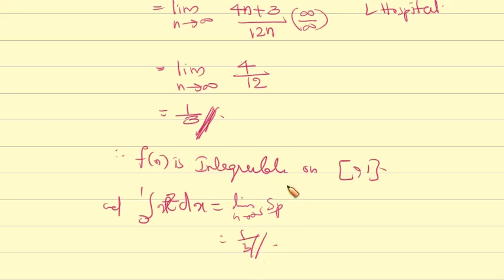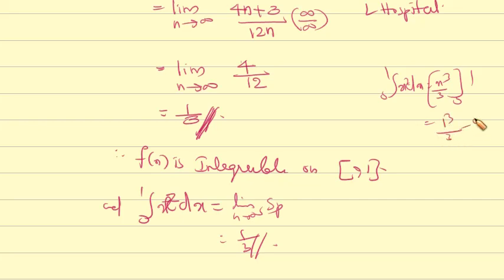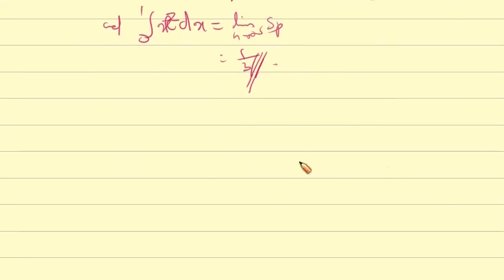We can verify: the integral from 0 to 1 of x² dx equals [x³/3] from 0 to 1, which equals 1³/3 − 0 = 1/3. This confirms our Riemann sum result.